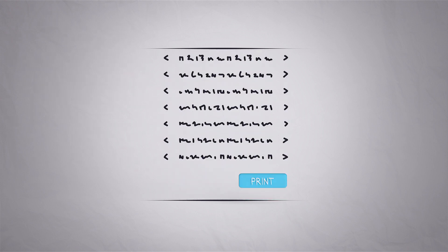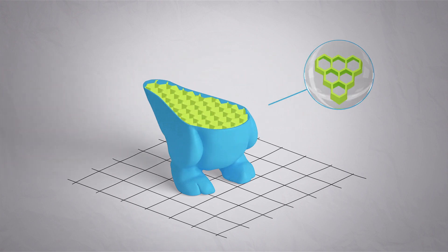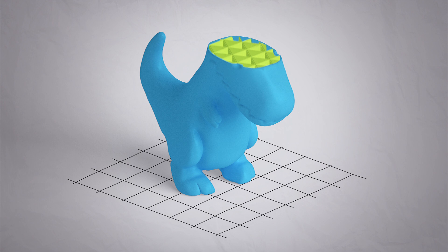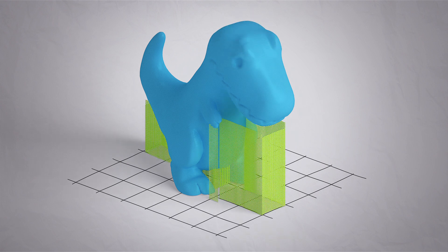For example, you can adjust the density of the infill, choose a type of infill, or modify the generated support structure of your model.